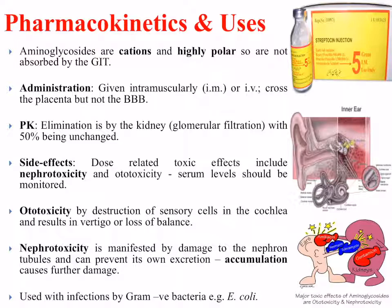Side effects are dose-dependent and can include nephrotoxicity and ototoxicity, which affects the ear, so serum levels should be monitored. Ototoxicity arises from destruction of the sensory cells in the cochlea and results in vertigo or loss of balance, whereas nephrotoxicity is manifested by damage to the nephrotubular cells and can prevent its own excretion, leading to accumulation and further damage. Clinically, it's used for infections by gram-negative bacteria such as E. coli.